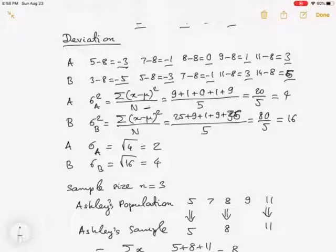So we get the deviations: negative 3 squared is 9, negative 1 squared is 1, 0 squared is 0, 1 squared is 1, and 3 squared is 9. So totally 20, divided by 5, we get 20 over 5 is 4.